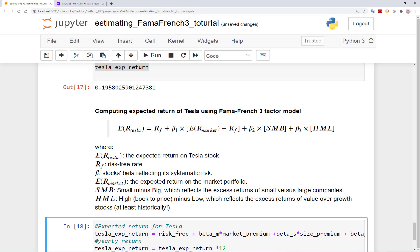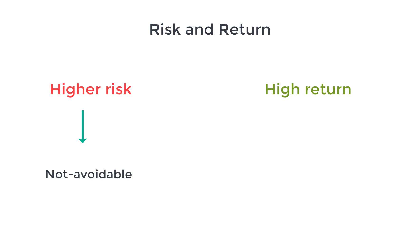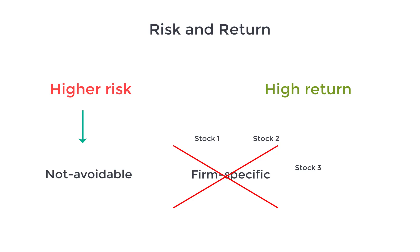Before we get into the details, let me explain one important point that relates to all these models of risk and return in finance. Typically, investments that come with higher risk should have higher expected returns — otherwise nobody would invest in those assets and companies. But the type of risk that would be rewarded are those risks that are not avoidable. Many types of risk are firm-specific and could be avoided by diversifying your portfolio and investing in many different stocks and assets. For example, investing in a very young tech company involves huge risk-taking, but you should not expect to be rewarded with very high returns because this risk could be easily avoided by diversifying your portfolio.